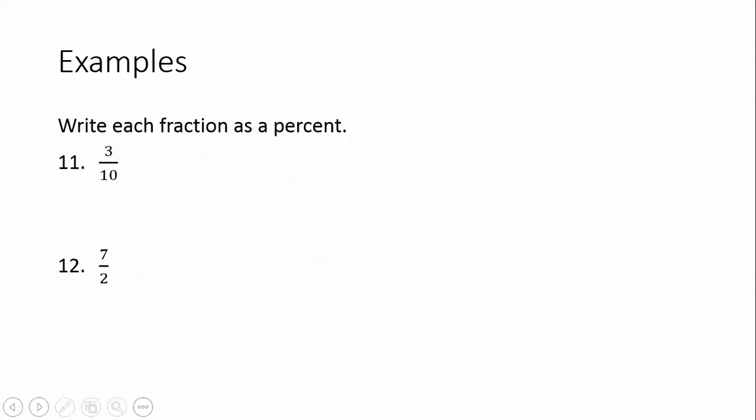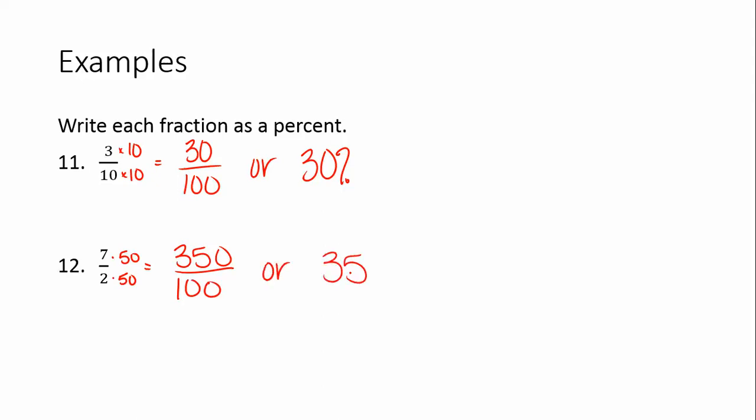If you'd like to pause the video here, try these two on your own and then check your answer. We want to multiply top and bottom by 10. It's going to give us 30 over 100. Or 30 percent. Number 12, we want to multiply by 50. 2 times 50 is 100. So we get 350 over 100, or 350 percent.